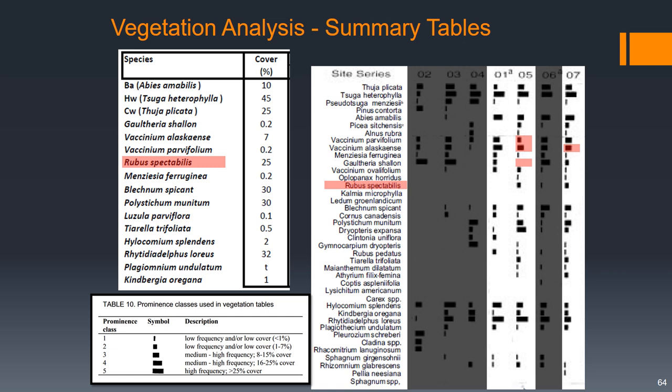Rubus spectabilis, salmonberry—we had 25%, a fair amount. So that puts us in site association 5 or 7.